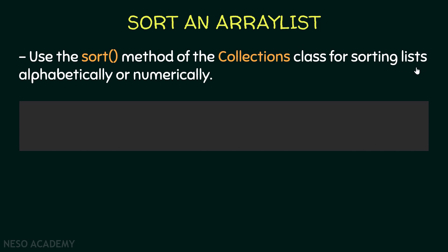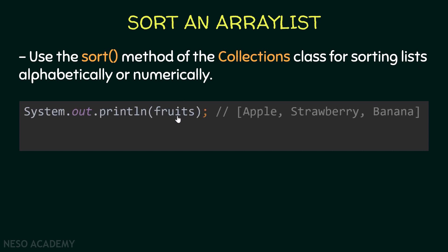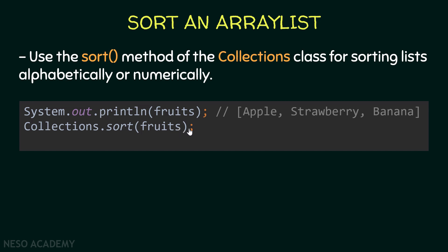First, let's print our fruits ArrayList using the println method — this will be the output. After that, we call the sort method of the Collections class, passing our ArrayList as an argument. After this statement is executed, our fruits ArrayList will be sorted alphabetically, because in this case it is an ArrayList of strings.